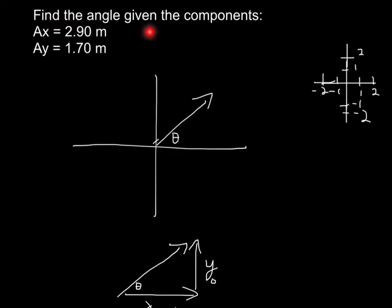In this question they say, find the angle given the components Ax equals 2.9 meters, Ay equals 1.7 meters.